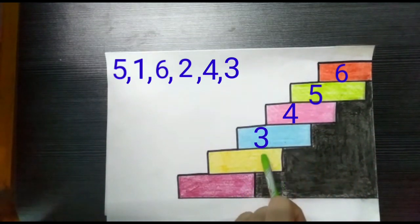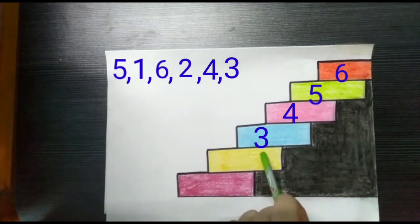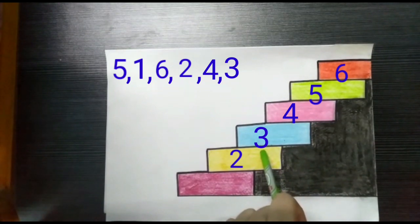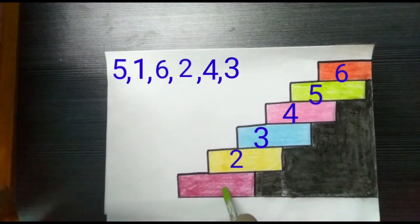That's right. The next yellow step is number 2. And the last step, the red step, is number 1.